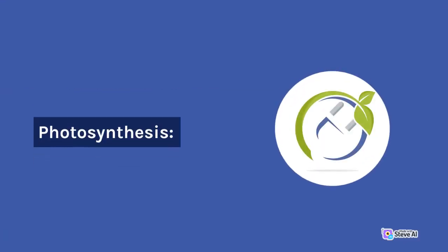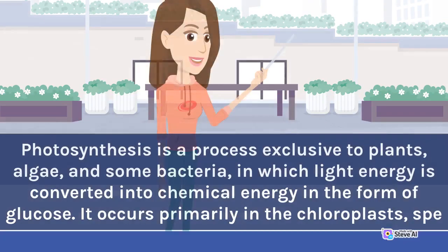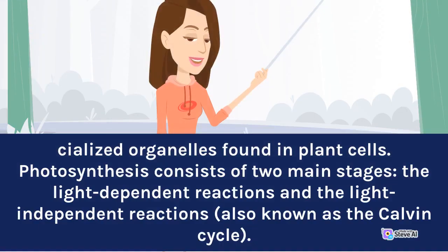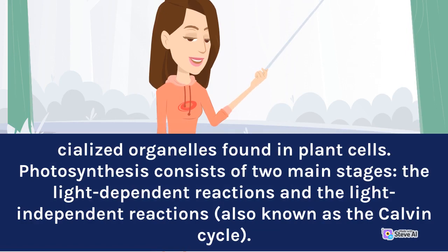Photosynthesis. Photosynthesis is a process exclusive to plants, algae, and some bacteria, in which light energy is converted into chemical energy in the form of glucose. It occurs primarily in the chloroplasts, specialized organelles found in plant cells. Photosynthesis consists of two main stages: the light-dependent reactions and the light-independent reactions, also known as the Calvin cycle.